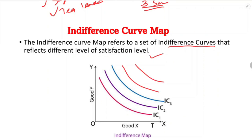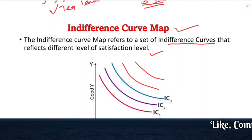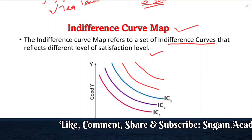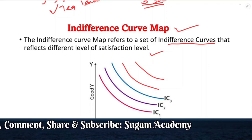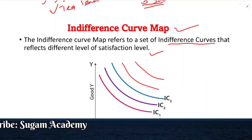An indifference curve map refers to a set of indifference curves that reflects different levels of satisfaction. So this is about indifference curves and their properties. I hope this class was helpful. If so, please like, share, and subscribe to get updated videos. Thank you and have a good day.